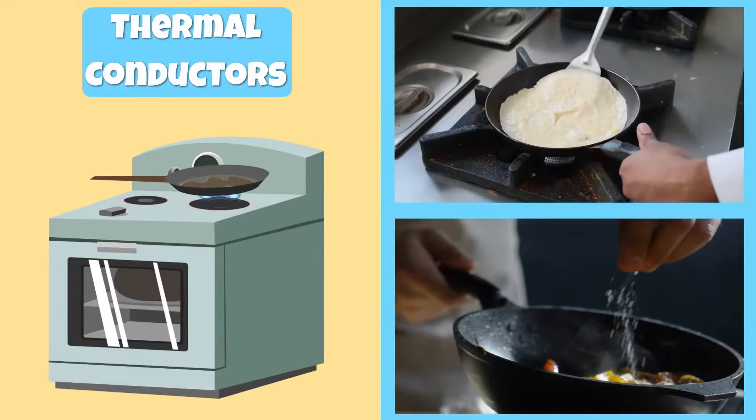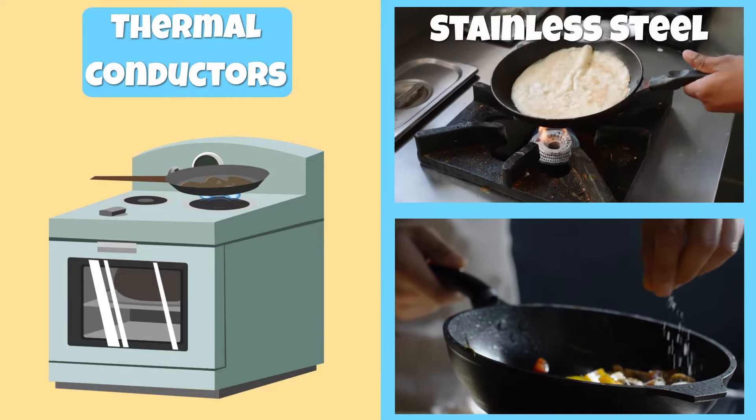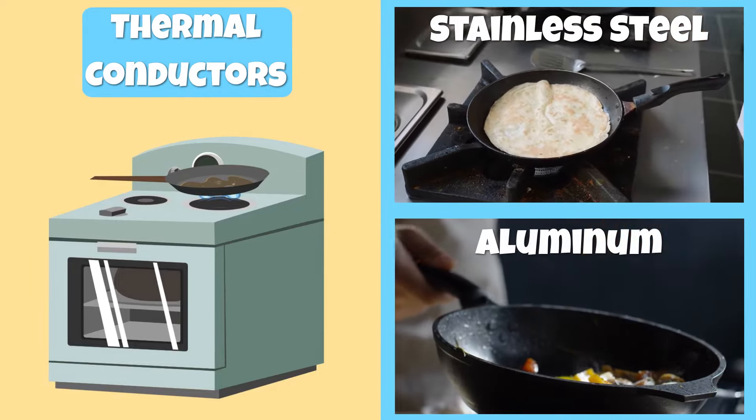Most pots and pans used for cooking are made of stainless steel and aluminum because they're good conductors.